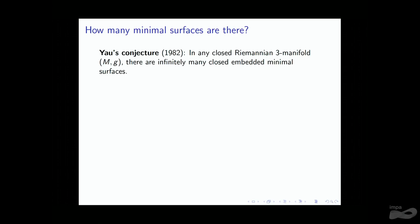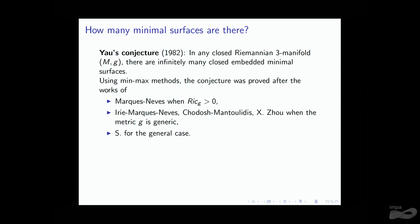Almgren-Pitts proved existence of one minimal surface in any three-dimensional manifold. Yao's conjecture — that there are infinitely many — was tackled first by Fernando Codá Marques and André Neves using min-max, who proved a particular case. Then Irie, Marques, Neves, Liokumovich-Marques-Neves, and Song Zhou were able to prove the conjecture for generic metrics — for a generic metric, you do have infinitely many minimal surfaces. And last year, we proved the general case. The analog question for geodesics was proved by Franks and Bangert in the 1980s, using purely dynamical techniques.